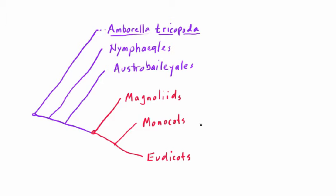Hypothetically, you could have things splitting off into three lineages, but the reality is that never happens. So we're just going to assume that this type of splitting, sometimes called a polytomy, is not going to happen.